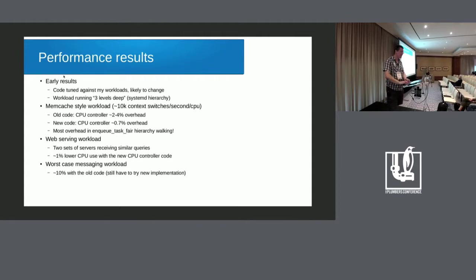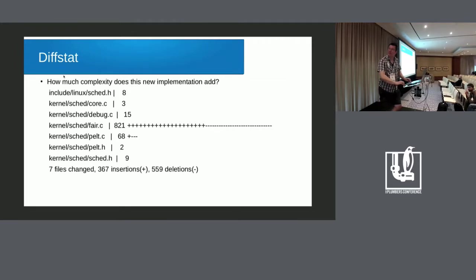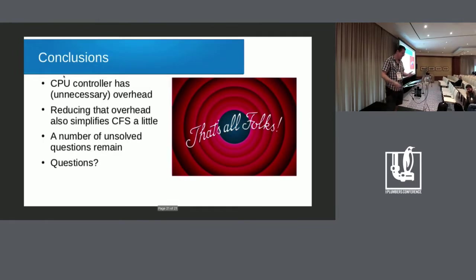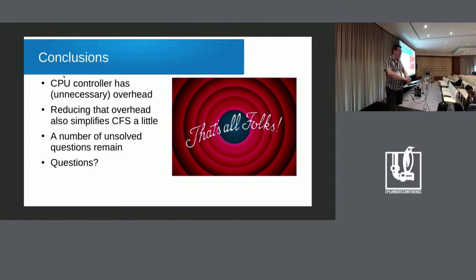There are apparently some workloads with about 10% performance overhead with the old code, and ways to get that overhead down will need to be found. The implementation adds some complexity but the diff stat shows it removes about 200 more lines than it adds. The CPU controller seems to have a lot of unnecessary overhead — something everybody agrees on, including those who wrote most of the original code. The hope is to reduce overhead in a way that also simplifies CFS, since the current code is so complex it makes you feel stupid about once a day.